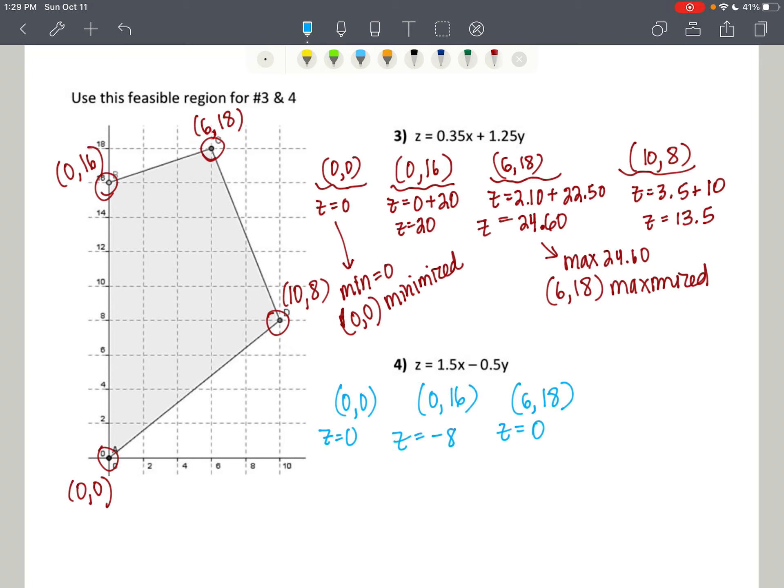That's very interesting. Two 0s. Pretty cool. And then 10, 8. 1.5 times 10 is 15. And half of 8 is 4. 15 minus 4 is 11. So which one is our maximum and which one is our minimum? Well, our minimum is negative 8. And that ordered pair 0, 16 minimizes. And our maximum is 11. And our ordered pair 10, 8 maximizes. So maximizes and minimizes.